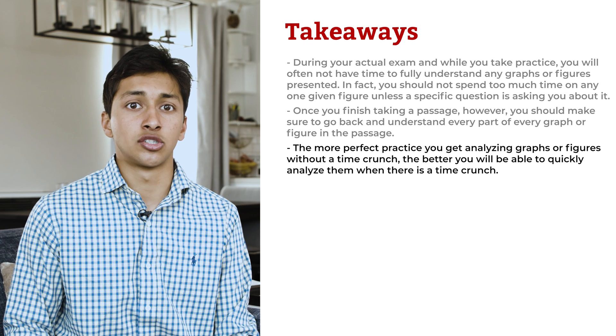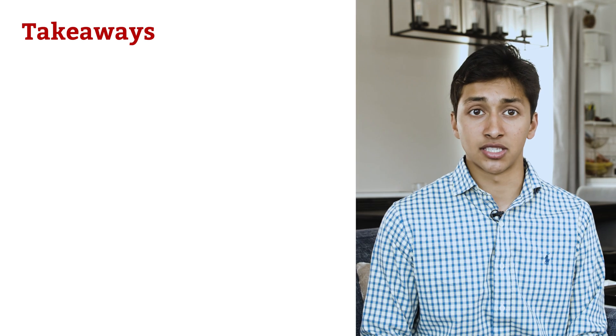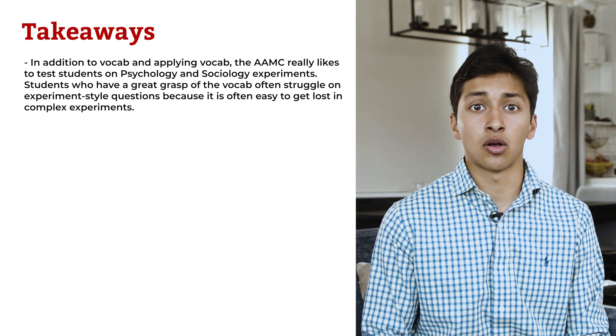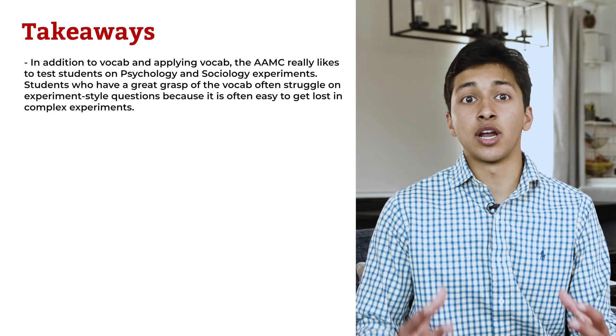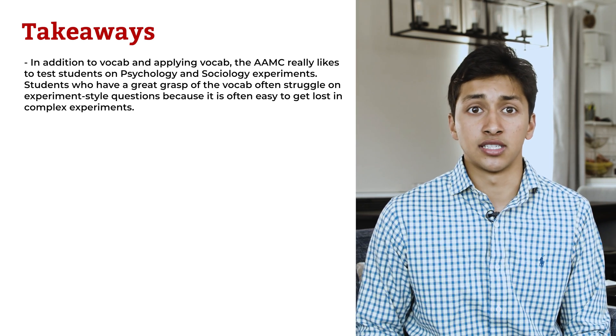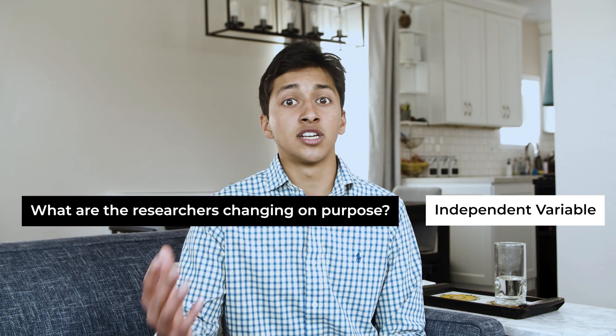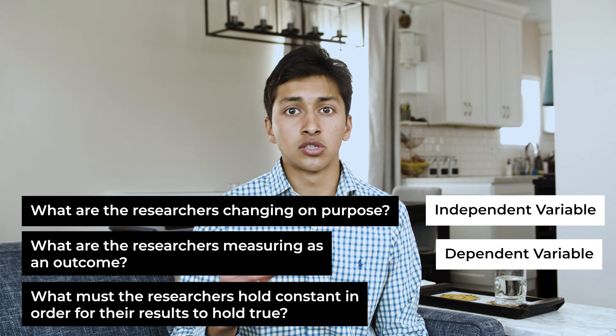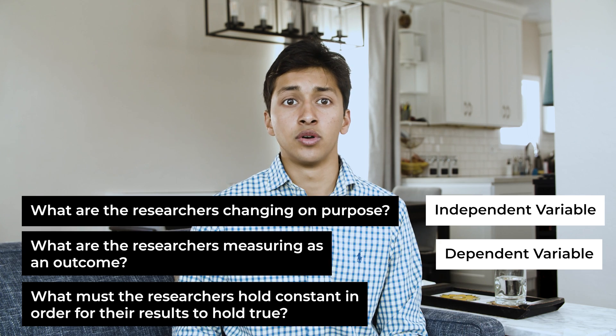Finally, let's look at our last study strategy for the MCAT psychology and sociology section. Tip number four: practice identifying the independent, dependent, and control groups within experiments mentioned in the passages. The AAMC really likes to test students on psychology and sociology experiments. Our tip is to practice identifying and writing down the key components of any experiment. What are the researchers changing on purpose? That is the independent variable. What are the researchers measuring as an outcome? That is the dependent variable. And what must the researchers hold constant? Those are the controls.